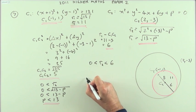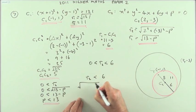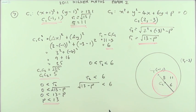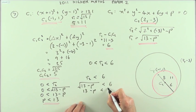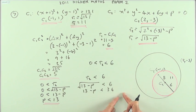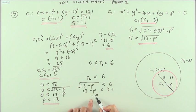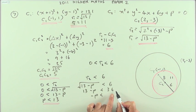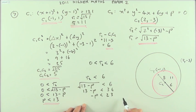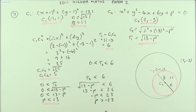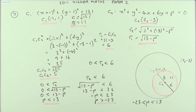The other half: r2 must be less than 6, so √(13 − p) < 6. Squaring both sides: 13 − p < 36. So −p < 23, meaning p > −23. Combining both parts, the range of values is −23 < p < 13. And really that's all there is to it — there's nothing to be scared of with circles.